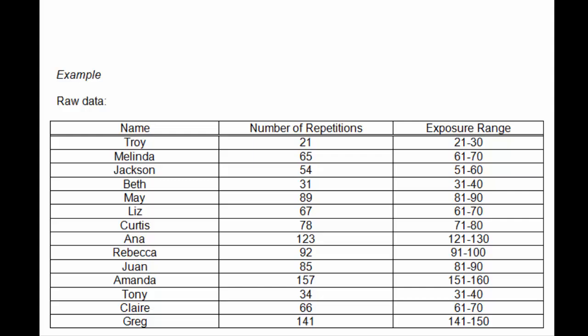After you have recorded the number of repetitions an individual can perform, categorize their maximum number of repetitions into exposure ranges with widths of 10. For example, 1 to 10, 11 to 20, 21 to 30, and so on. The categorizations for our example are shown in the column to the right.